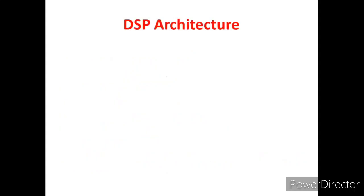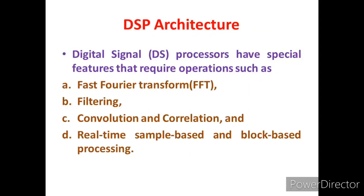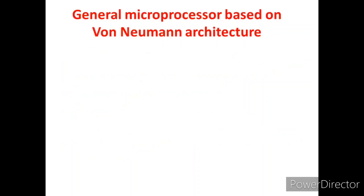First, let us look at the DSP architecture. A digital signal processor has special features that require operations such as Fast Fourier Transform, filtering, convolution, and correlation, as well as real-time sample-based and block-based processing. These are the important features present in a digital signal processor, because fast computation is required for large amounts of data or for filtering operations.